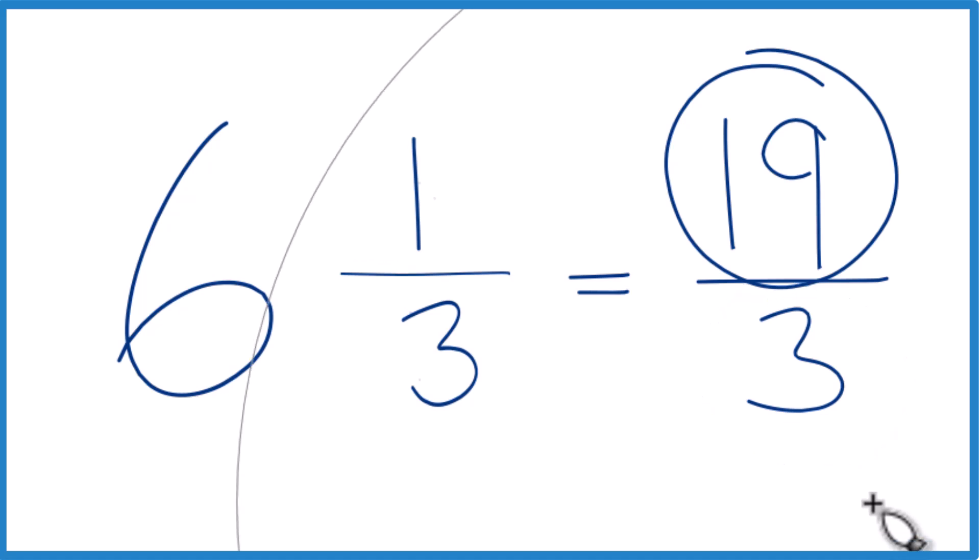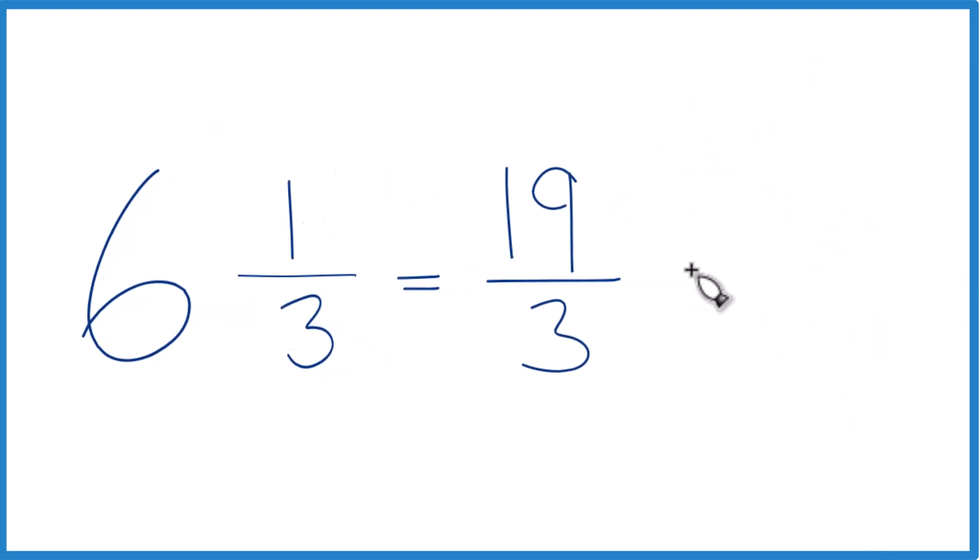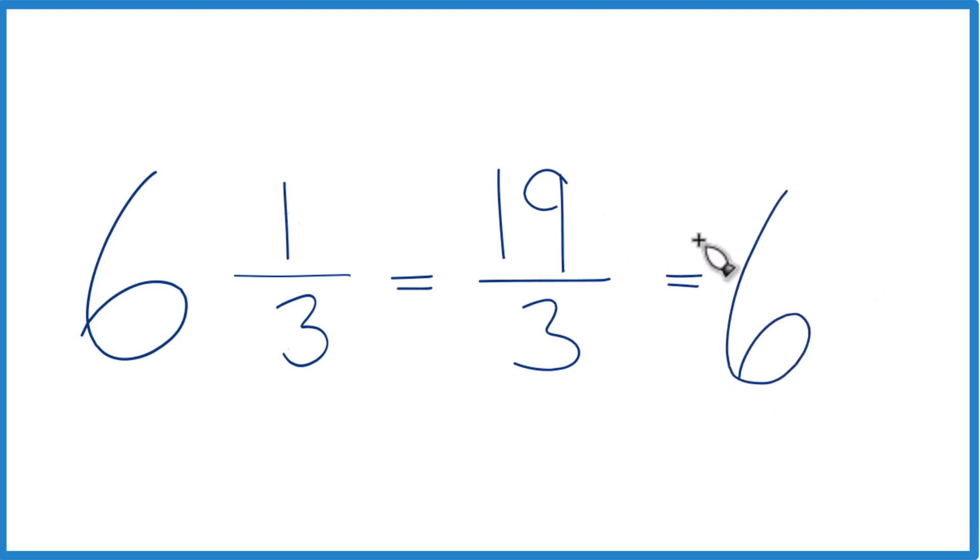You can even check your work here because three goes into 19 six times. Three times six, that's 18 with one left over. Bring that three across, you get six and one-third.